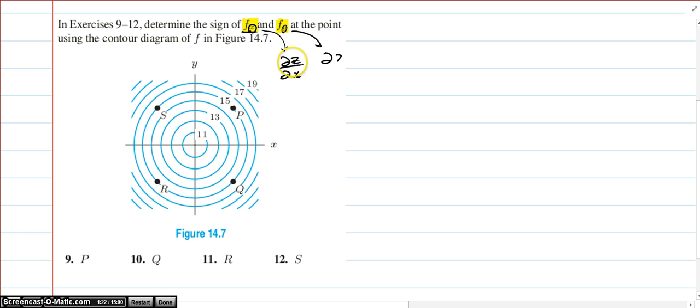So this problem is asking us to get fx and fy for each point P, Q, R, S and the sign of it. So first P is right here. First piece, fx. So fx means y is constant, so it's moving horizontally like this.